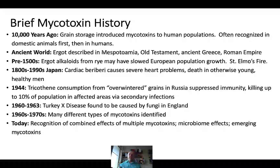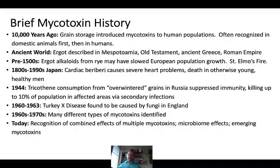Mycotoxin history goes back a long time. In fact, it probably goes back approximately 10,000 years ago when grains began to be domesticated and used as long-term food rations. We see mention of this in the ancient world repeatedly, and ergot was repeatedly mentioned across the ancient world. It was mentioned in pre-1500s Europe and may have been a reason for stunting of growth and slowed population growth. St. Elmo's fire is an inhibition of circulation, and this disease was frequently described in Europe and may have been a result of consumption of rye.